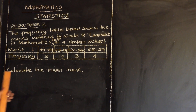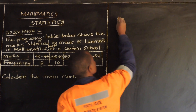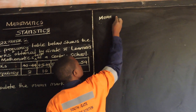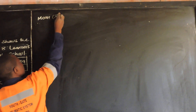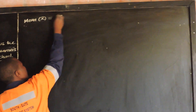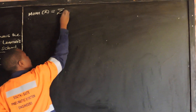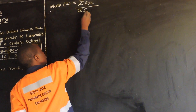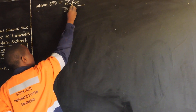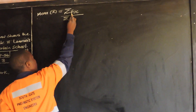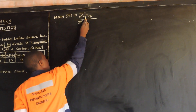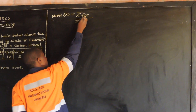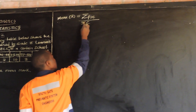So how do we find the mean? First we are going to write the formula. We know that mean, which is denoted by x-bar, is equal to the summation of frequency multiplied by the midpoint, divided by the summation of the frequency. So this f stands for frequency, and x stands for midpoint.